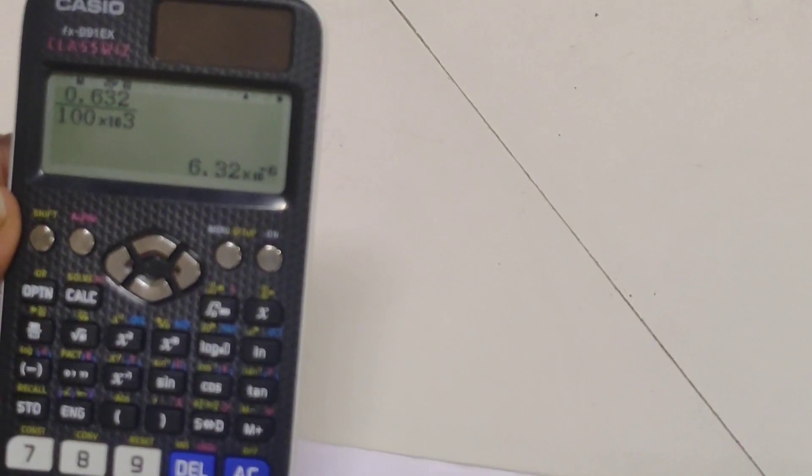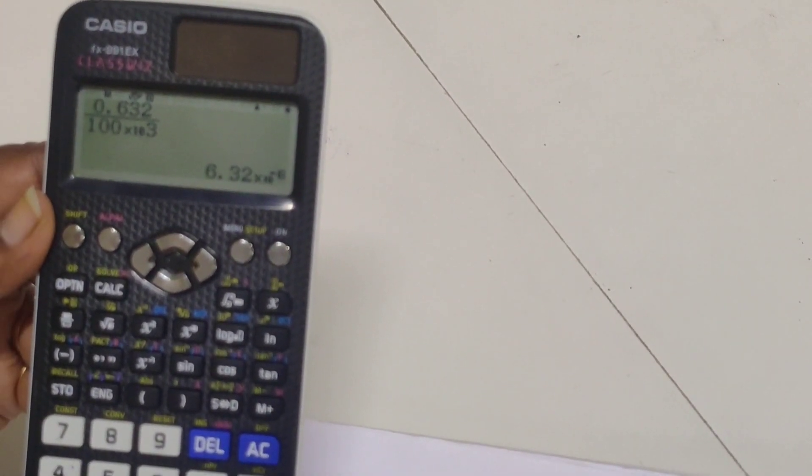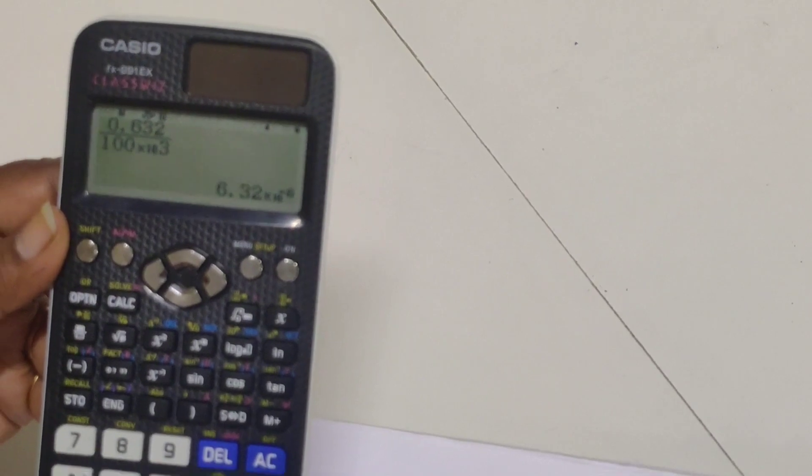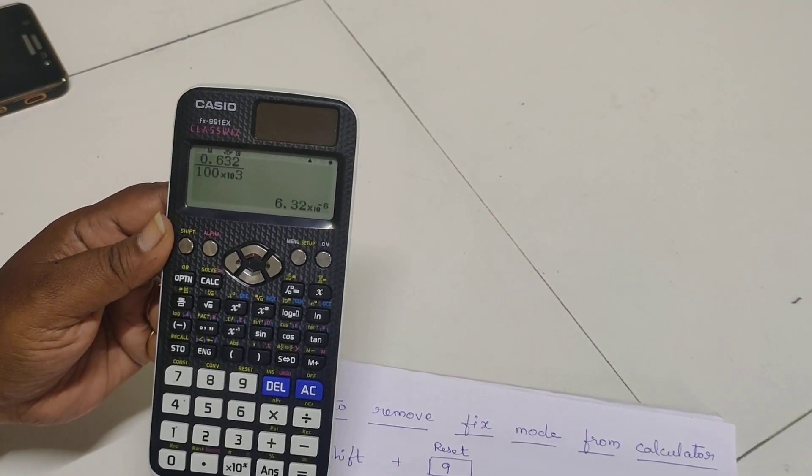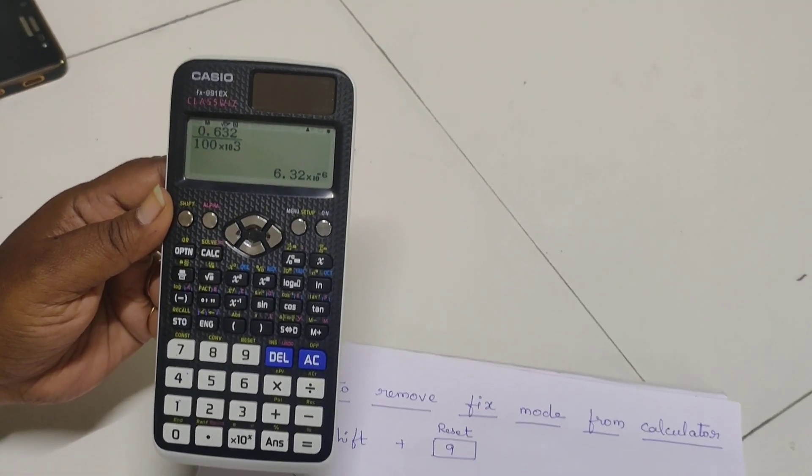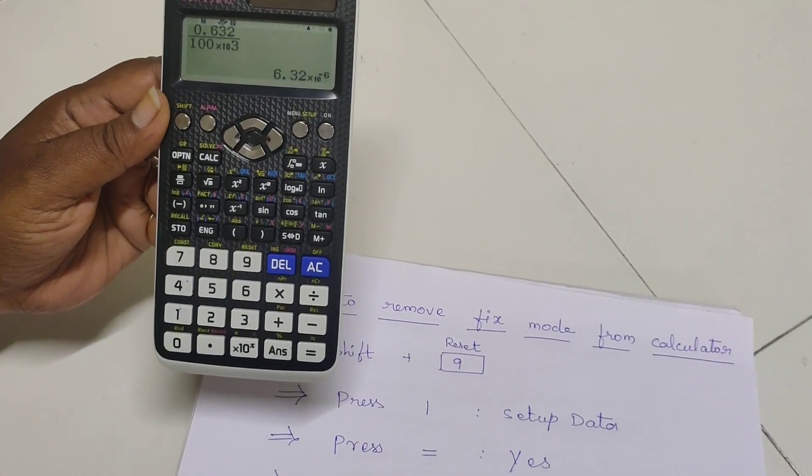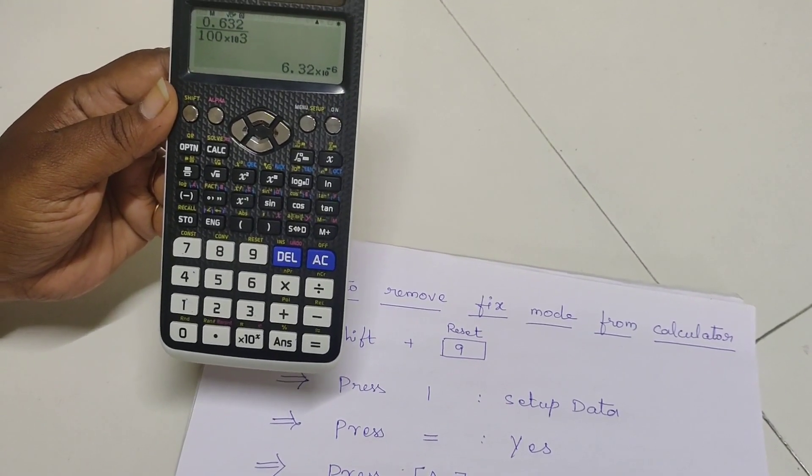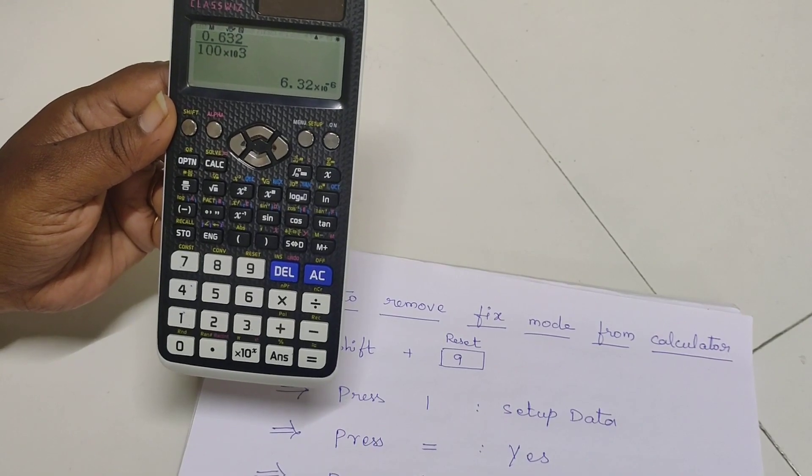Previously before removing the fix mode it shown only 0.000 but now the value is 6.32 into 10 to the power of minus 6. In this way we have to remove the fix mode from the calculator to get the exact value. I hope you understand this. Thank you everyone.